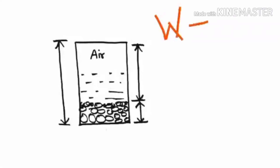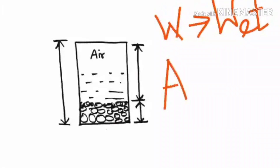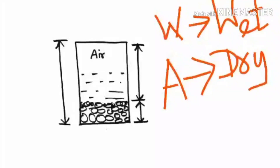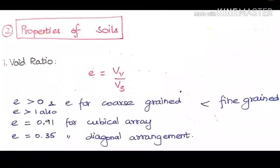If the voids are filled with water alone, the soil is called wet soil. If the void is filled with air alone, the soil is called dry soil. This is the difference between soil types — it purely depends on what the voids are filled with. Now we will continue with the properties of the soil.